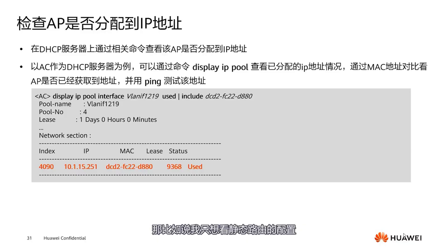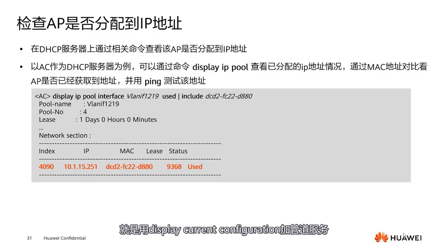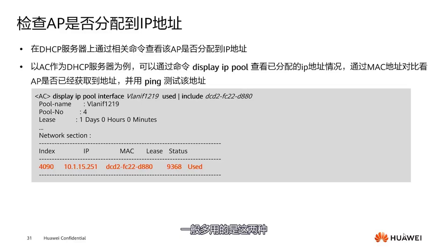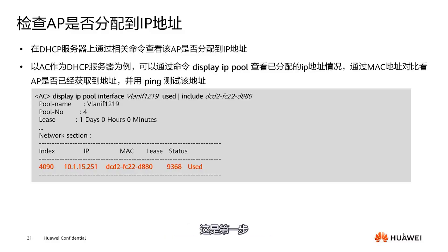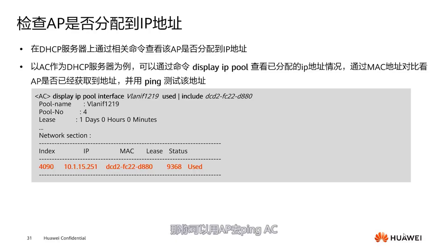Whether the AP connection exceeds the limit can be checked using a license. Display license shows how many APs the full license can manage. There are limits to the number of APs that an AC can manage. On our Agile distribution, a license is per AP — like a central AP only needs one license. The maximum number of APs is generally specified for that platform.